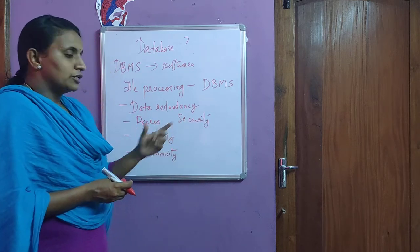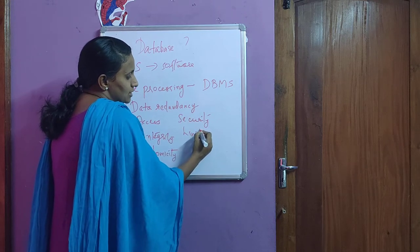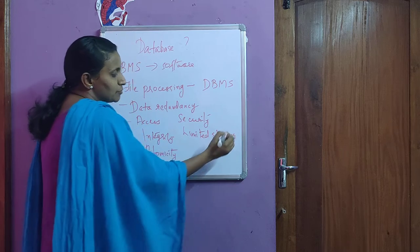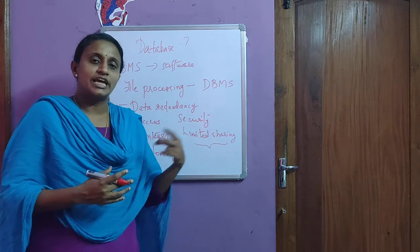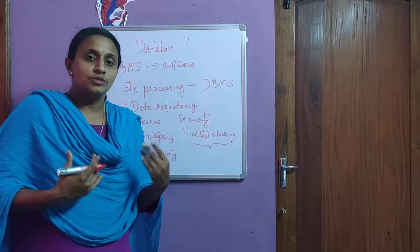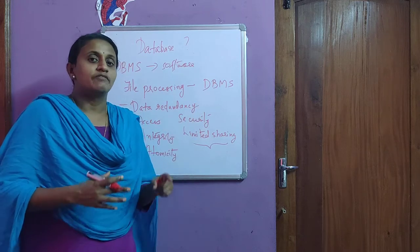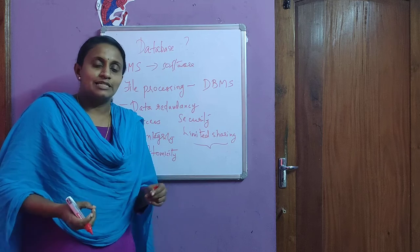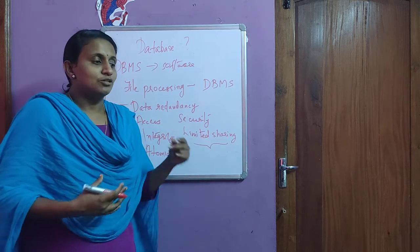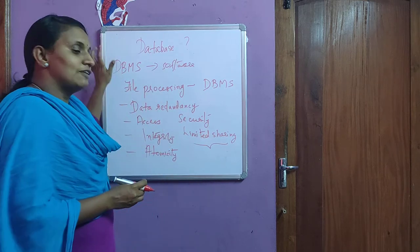The last disadvantage is limited sharing capacity. In traditional file processing, the sharing facility is very limited — we cannot share a paper file with many people at the same time. But in a database management system, or computerized file processing, the same database can be shared by many persons at the same time. That is again a key advantage of DBMS over traditional file processing.